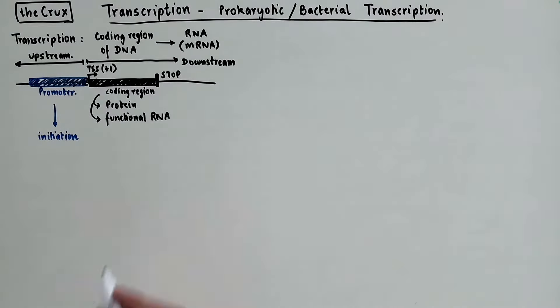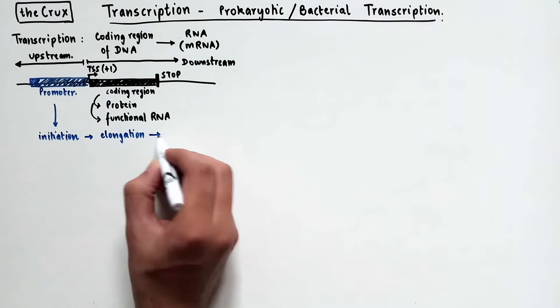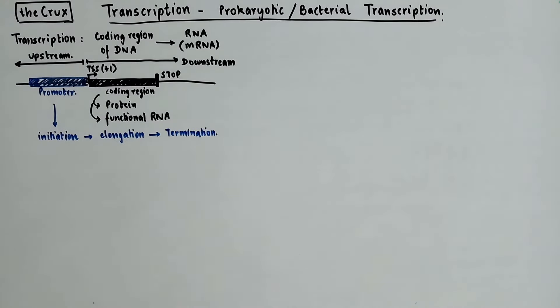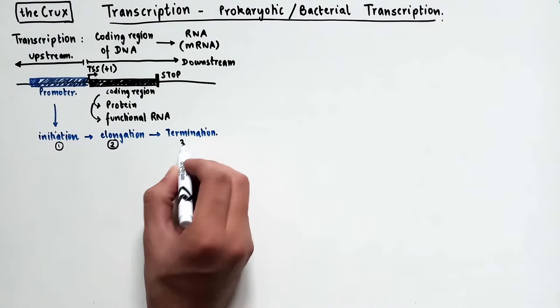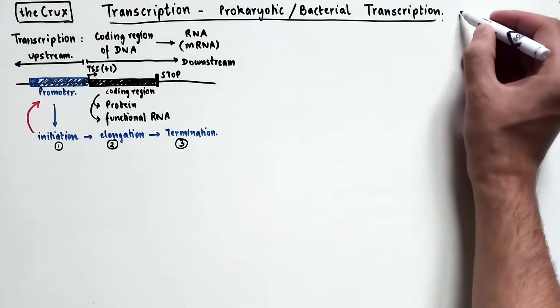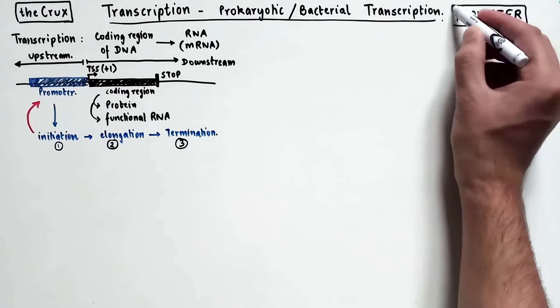And once transcription is initiated, it continues along the coding region in a process called elongation. And then it terminates at the stop signal. So, you could divide the entire process of transcription into three steps. Since transcription is initiated via the promoters, we should first discuss about the organization of the promoter DNA.